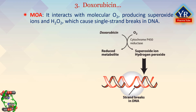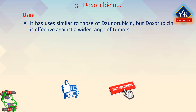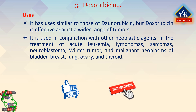Doxorubicin and other anthracyclines induce cytotoxicity through several different mechanisms. For example, doxorubicin-derived free radicals can induce membrane lipid peroxidation, DNA strand scission, and direct oxidation of purine or pyrimidine bases, thiols, and amines. Doxorubicin interacts with molecular oxygen producing superoxide ions and hydrogen peroxide, which causes single-strand breaks in DNA. It is used in conjunction with other antineoplastic agents in the treatment of acute leukemia, lymphomas, sarcomas, neuroblastoma, Wilms tumor, and malignant neoplasms of the bladder, breast, lung, ovary, and thyroid.